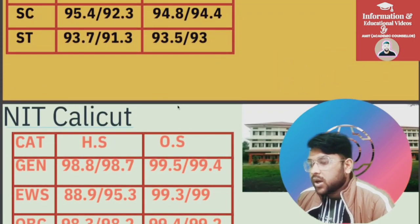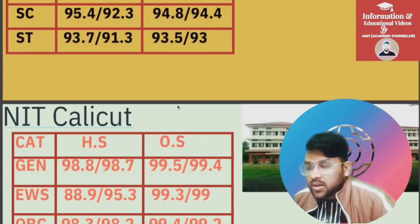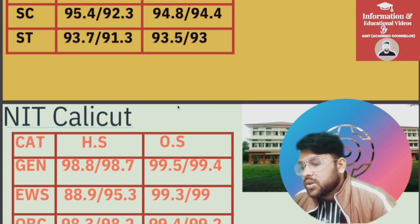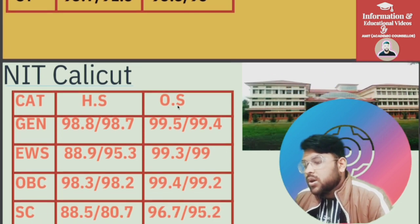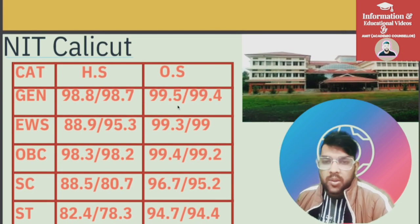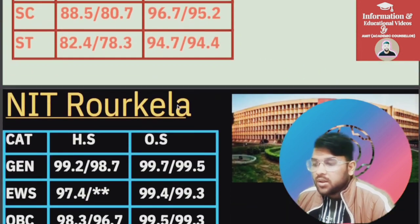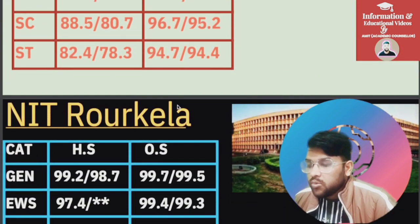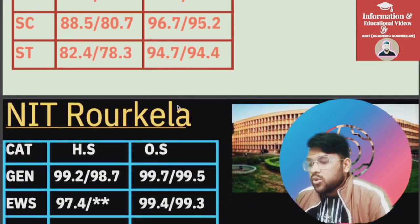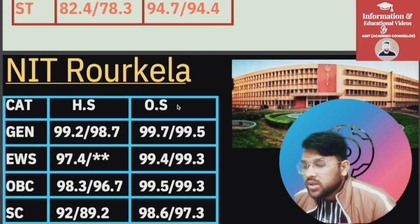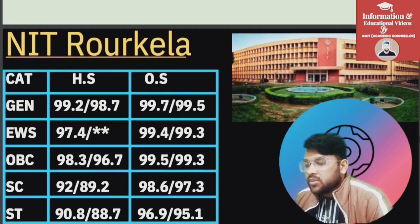For NIT Calicut: General 99.5, EWS 99.3, OBC 99.4, SC 96.7, ST 94.7 percentile. For NIT Rourkela: General 99.7, EWS 99.4, OBC 99.5, SC 98.6, ST 96.9 percentile.